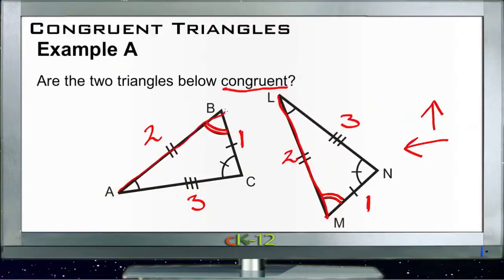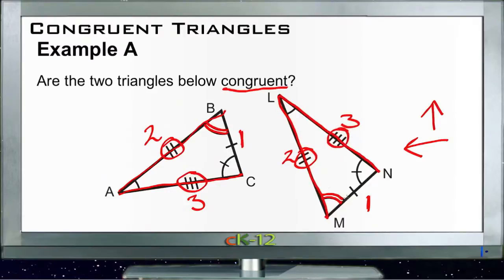We know side two is the same on both triangles because they're both marked with double hash marks. If the right triangle were flipped over, side three with the triple hash marks would be on the bottom — which is also the bottom on the other triangle, so those two sides are congruent. Finally, side one on the right-hand side has one hash mark and matches side one on the other triangle, so those are also congruent.